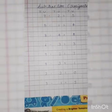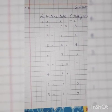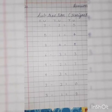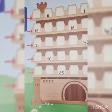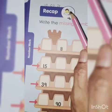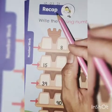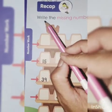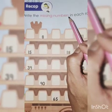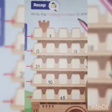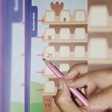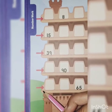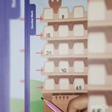Done. So, this way you have to do your maths work. Your writing should be very neat and clean, kids. Book number 3, open page number 71 to 72. Mention today's date. Recap means revision. Write the missing numbers in each row. Here we have 5 rows.